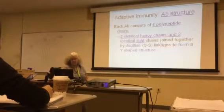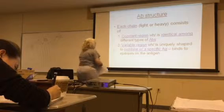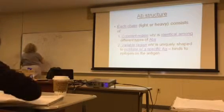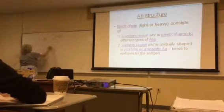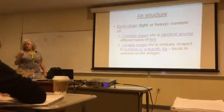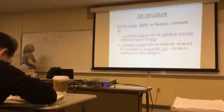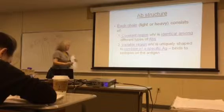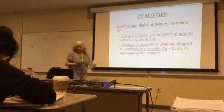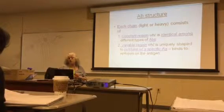At the binding center, the antibodies bind to the epitopes of that bacterium. Antibodies have a constant region, which is identical among different types of antibodies. Then they have variable regions, which are unique to a specific type of antigen and bind to those epitopes. For example, if you have an antigen from an E. coli bacteria, the variable part will be specific for that particular antigen.